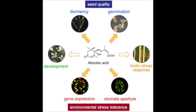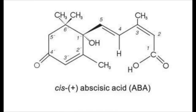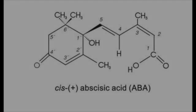Abscisic acid is a plant hormone that regulates certain plant mechanisms such as dehydration, bud and seed dormancy, and the abscission of leaves and fruits. This hormone is composed of 15 atoms of carbon, 20 atoms of hydrogen, and 4 atoms of oxygen.